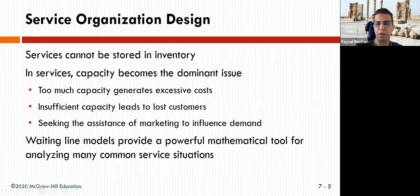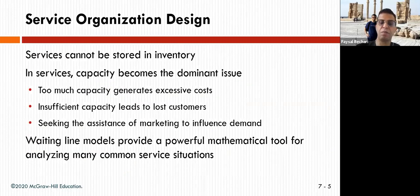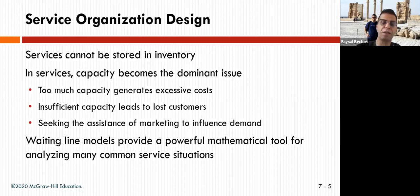Now, for service organization design — how are we going to design it? Service cannot be stored in inventory, so it is a perishable good. Capacity is the dominant issue. If you have one person delivering service for 10 people, two persons for 20 people, and so on. Too much capacity generates excessive costs — if 10 people are waiting and only one customer shows up per hour, that's excessive cost.